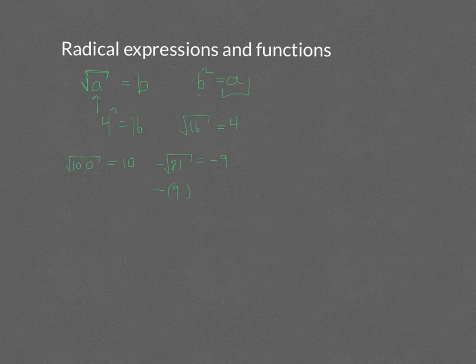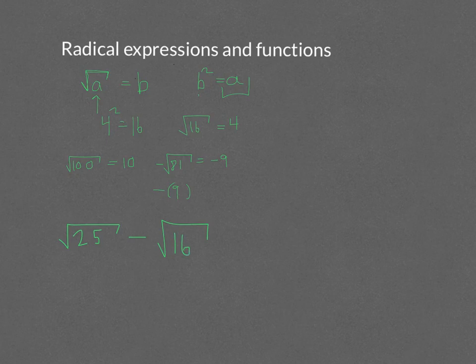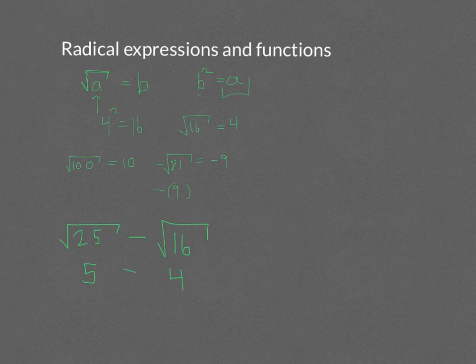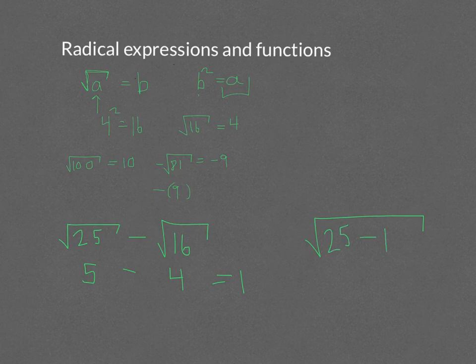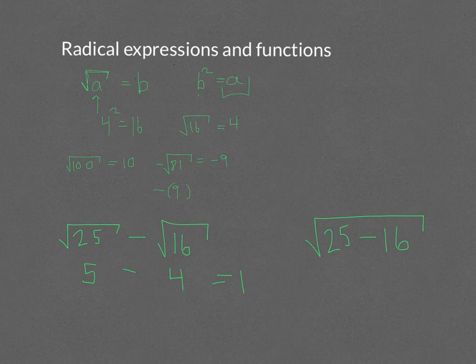Let's look at the square root of 25 minus the square root of 16. The square root of 25 is 5 and the square root of 16 is 4, so the answer is 5 minus 4, which is 1. Now if we had the square root of 25 minus 16, order of operations means square roots are part of the exponents, so we do the subtraction first: 25 minus 16 is 9.